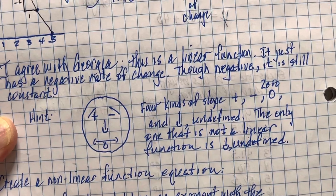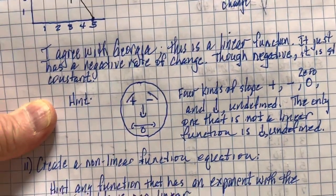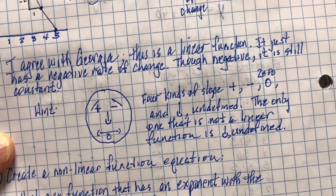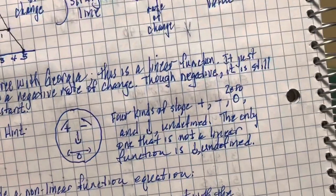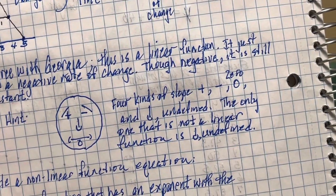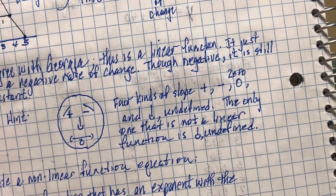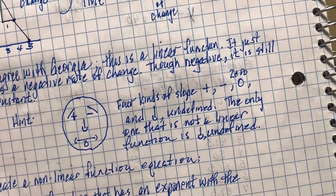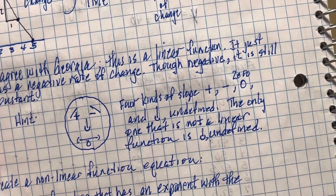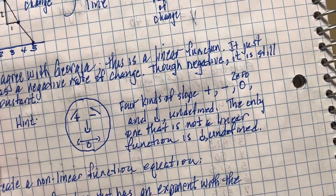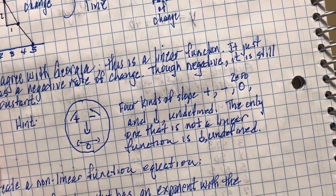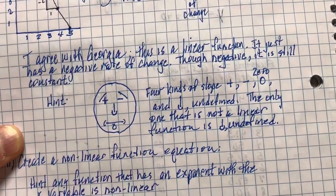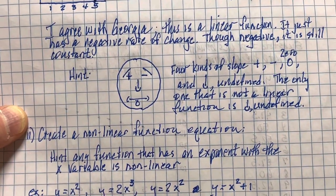Here's a big hint — we talked about Mr. Slope Guy. There are four kinds of slope: positive, negative, zero, and undefined. The only one that is not a linear function is undefined slope, because if you have an undefined slope you'll have x-values that repeat, which makes it a non-function.